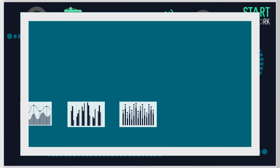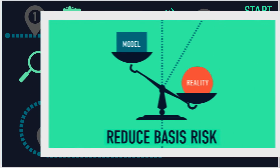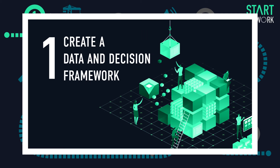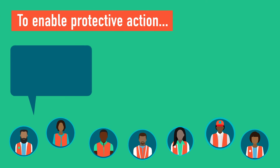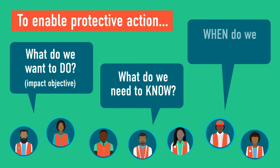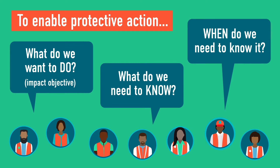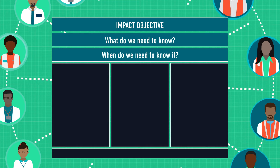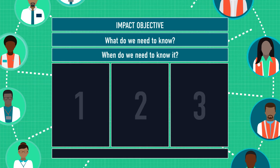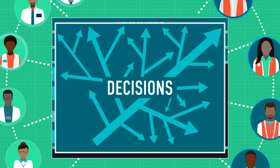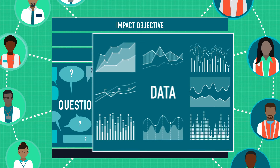Working in this sequence will ensure the best possible datasets are selected while reducing the chance of basis risk. Checkpoint 1: start off by creating a data and decision framework. The first three questions for users to ask are: what do we want to do to enable the action? What do we need to know? And when do we need to know it? Users can then work together with providers to explore the system to be built, based on three elements: what questions does the data system have to answer; what decisions need to be taken and when; and what are the proposed or possible datasets to use?